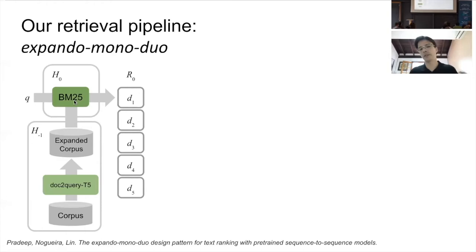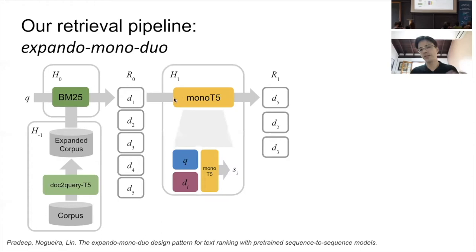Once we have this expanded corpus, we use BM25 to provide an initial set of candidate documents for a given query. Then we use a re-ranker called MonoT5 — a T5 model. In particular we show results on the three-billion-parameter version, which is quite expensive but works really well in the zero-shot setting. MonoT5 takes a query and a candidate document as input and estimates the relevance of that document to the query.